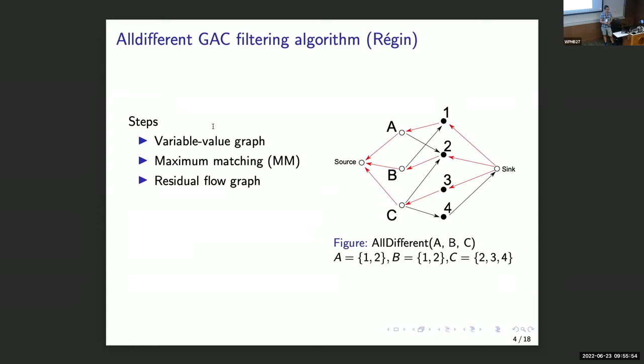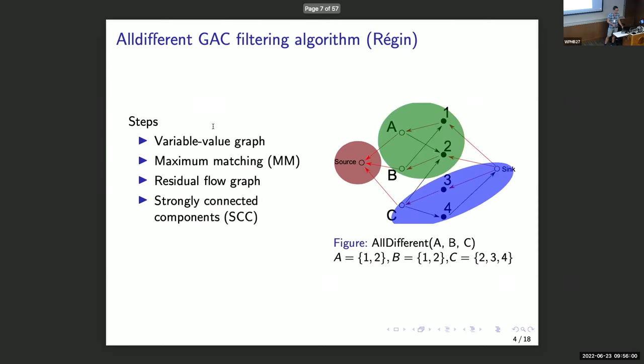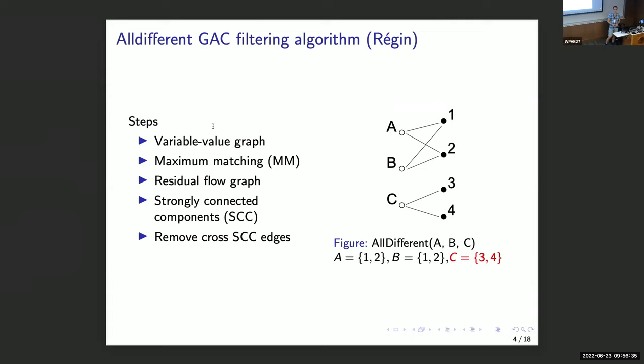So you can construct this flow from a flow graph, and then you consider the residual flow graph. And then on this residual flow graph, we have to find the strongly connected components. Then we can identify all the edges, all the arcs that cross SCCs and are not part of the matching, and those are the ones that are inconsistent. So here we see the arc from C to 2, and that means that the value 2 doesn't need to be in the domain of C. We can safely remove it without removing any of the solutions.